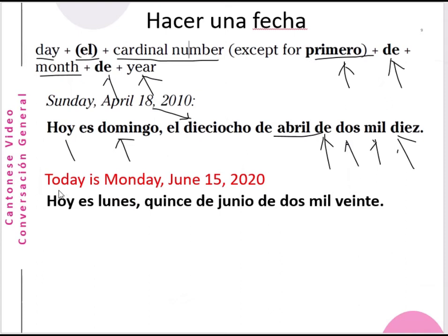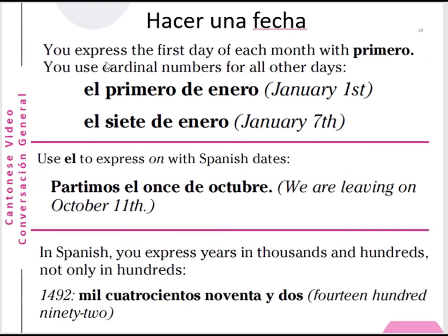Another example: if today is Monday, June 15, 2020 — 'Hoy es lunes, quince de junio, de dos mil veinte.' Now the rules for hacer una fecha: First, express the first day of each month with primero; use cardinal numbers for all other days. So January 1st is 'el primero de enero,' and January 7th is 'el siete de enero' — we don't say 'el séptimo de enero.'